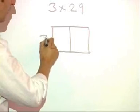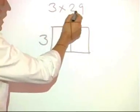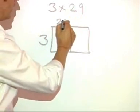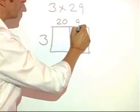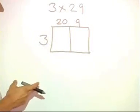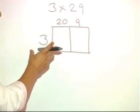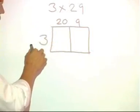For example, I put the 3 here. I split the 29 into 20 and 9. Obviously, this method requires a good working knowledge of place value. And once I've done that, then I can do the separate calculations.